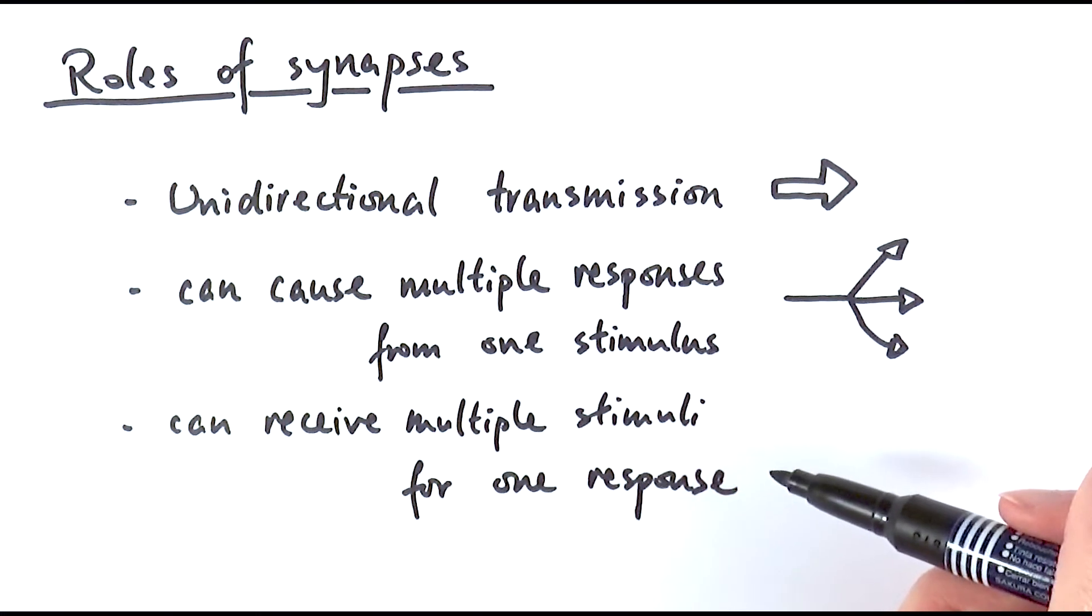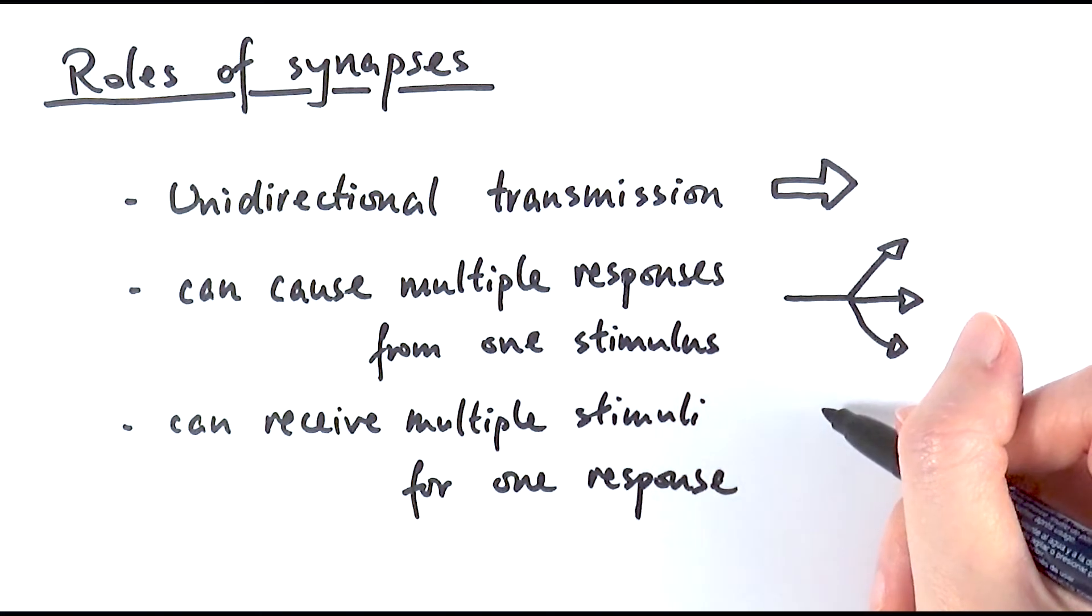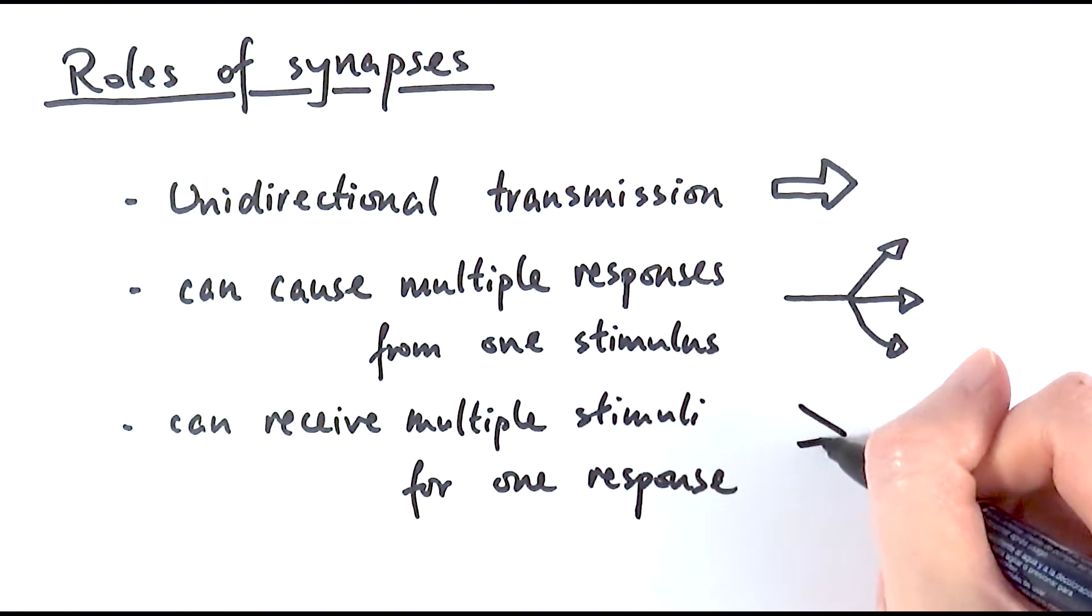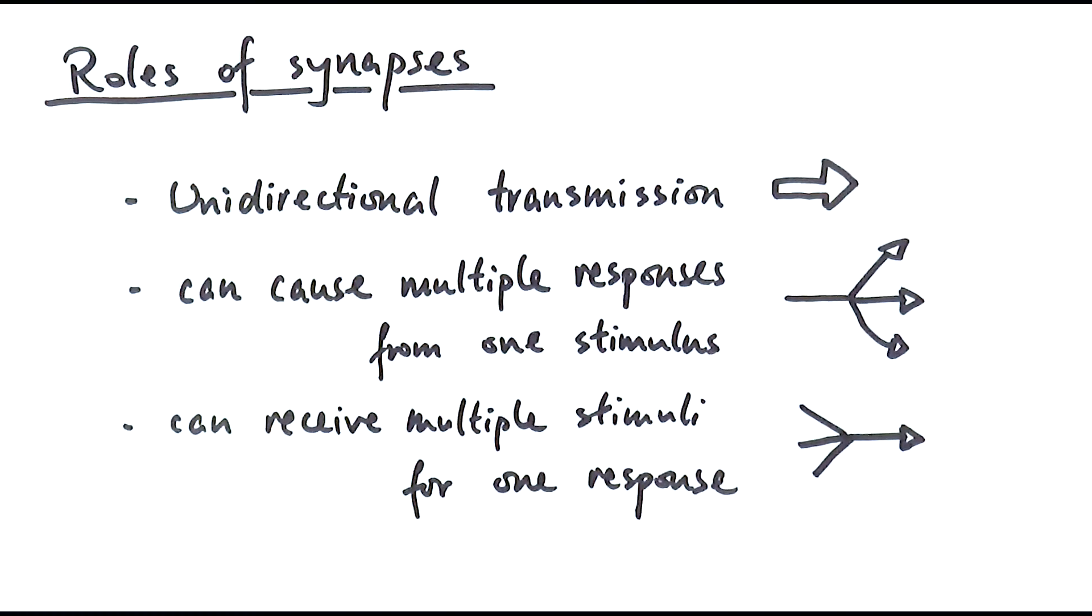On the other hand, it could work in the opposite way, where you can receive multiple signals or stimuli, and all together would coordinate one response. That relies on the different synapses in between to connect multiple neurons, because synapses basically connect the neurons together.